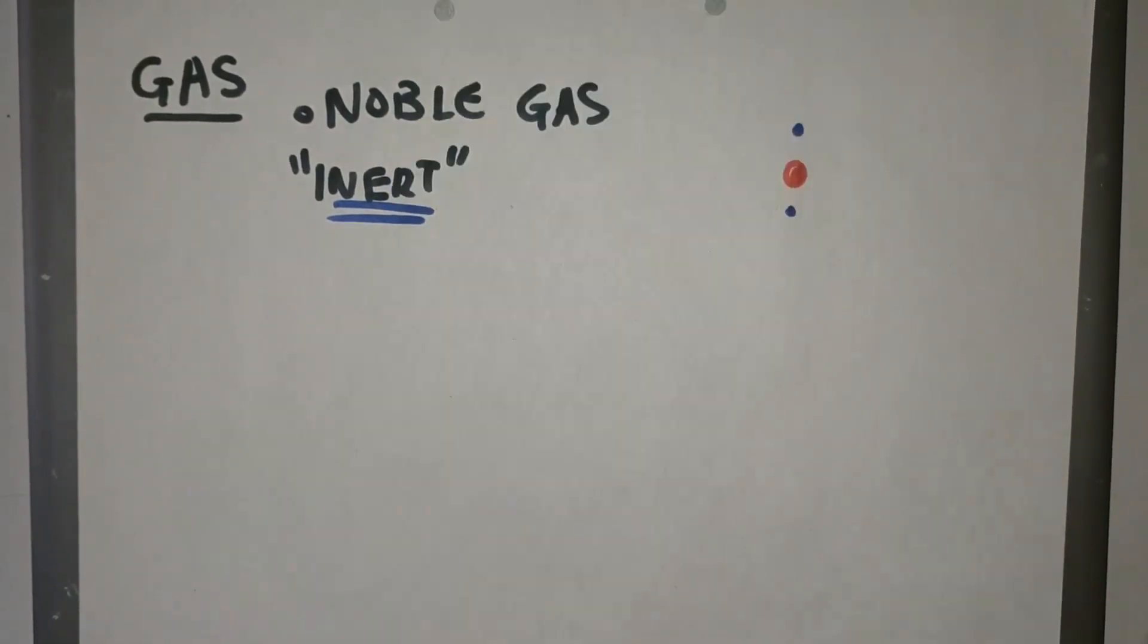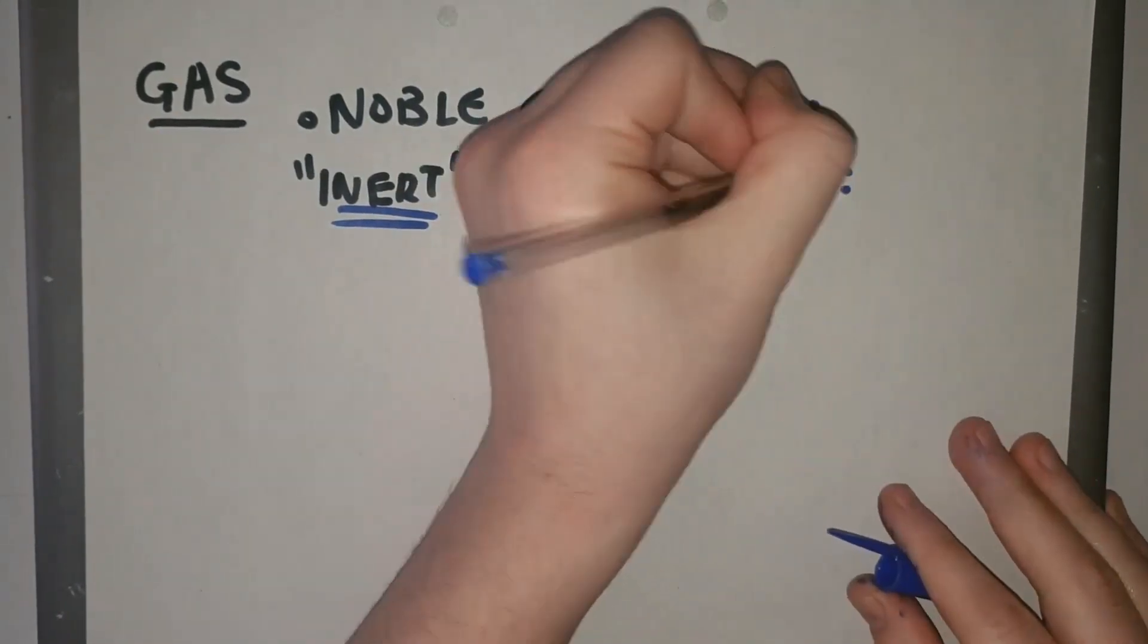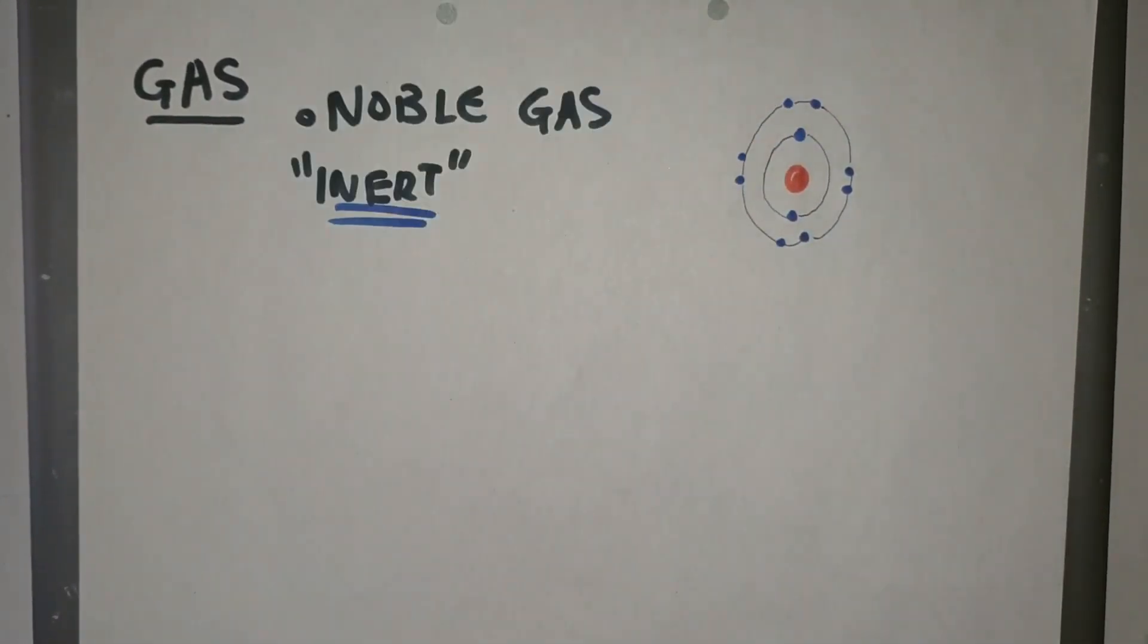So we use these gases because the atoms of this gas have a full outer electron shell and that means the gas is inert. It means it rarely reacts.